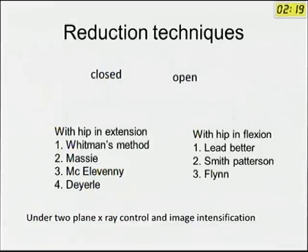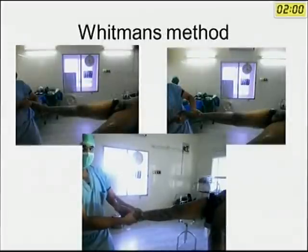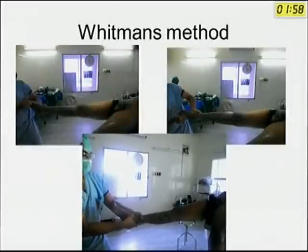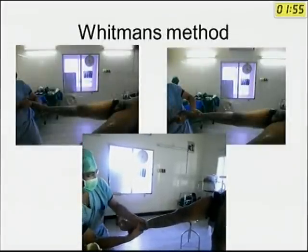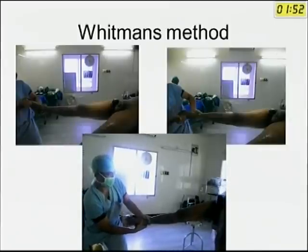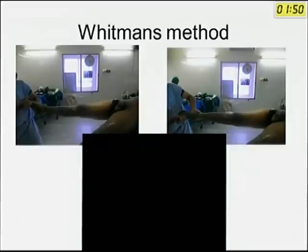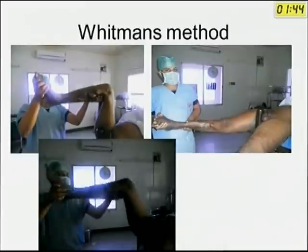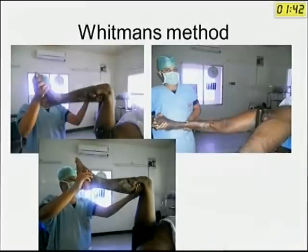Regarding reduction techniques, both closed and open, closed methods should be taught to postgraduates. With the hip in extension, Whitman's method is commonly followed; with the hip in flexion, Leadbetter's method is used, though other methods are also described. In Whitman's method: hip in extension and abduction — this is the most commonly followed method with very good results.